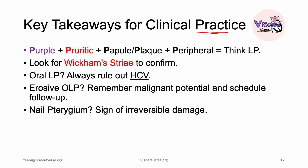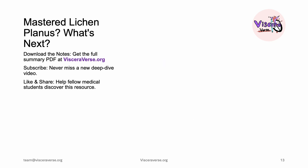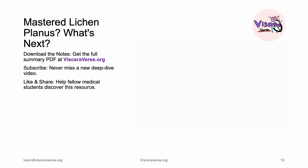The key takeaway for clinical practice: whenever you see a patient with purple, pruritic plaques or papules that are peripheral on the wrists or ankles, think of lichen planus. Always look for Wickham striae to confirm, as these are pathognomonic. For oral lichen planus, always check for HCV infection. Erosive oral lichen planus always requires a follow-up. Nail pterygium is a sign of irreversible damage. You can download the full summary notes from veseverse.org. Please subscribe, like, and comment what topic you'd like to see next.